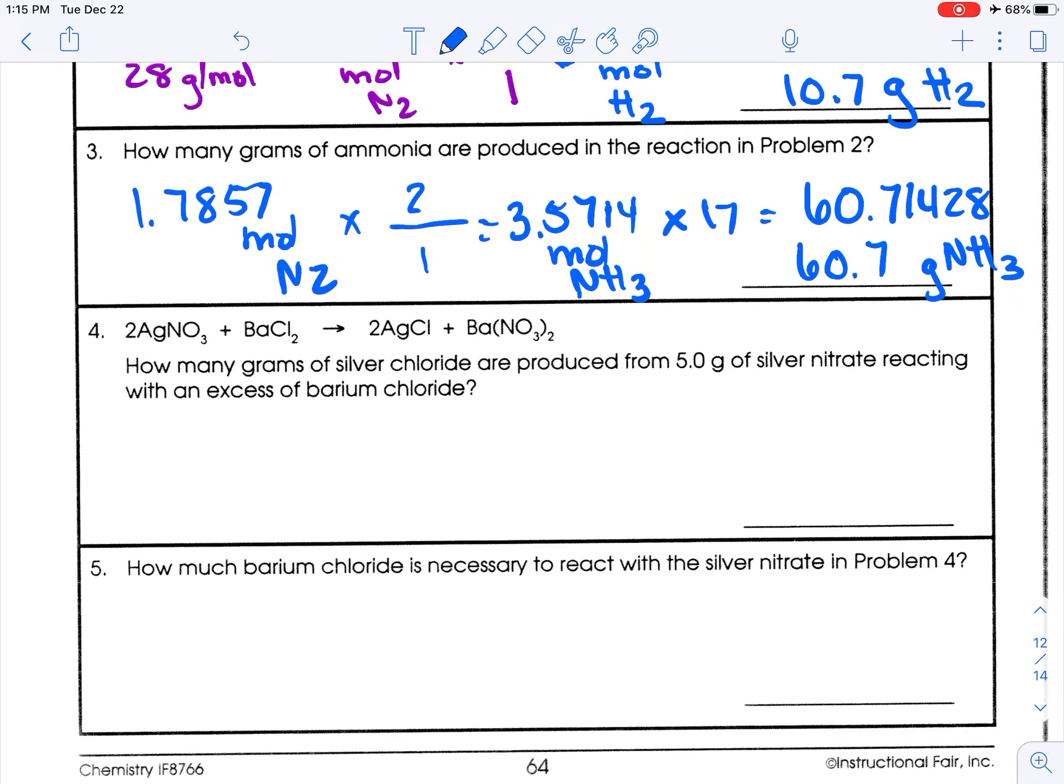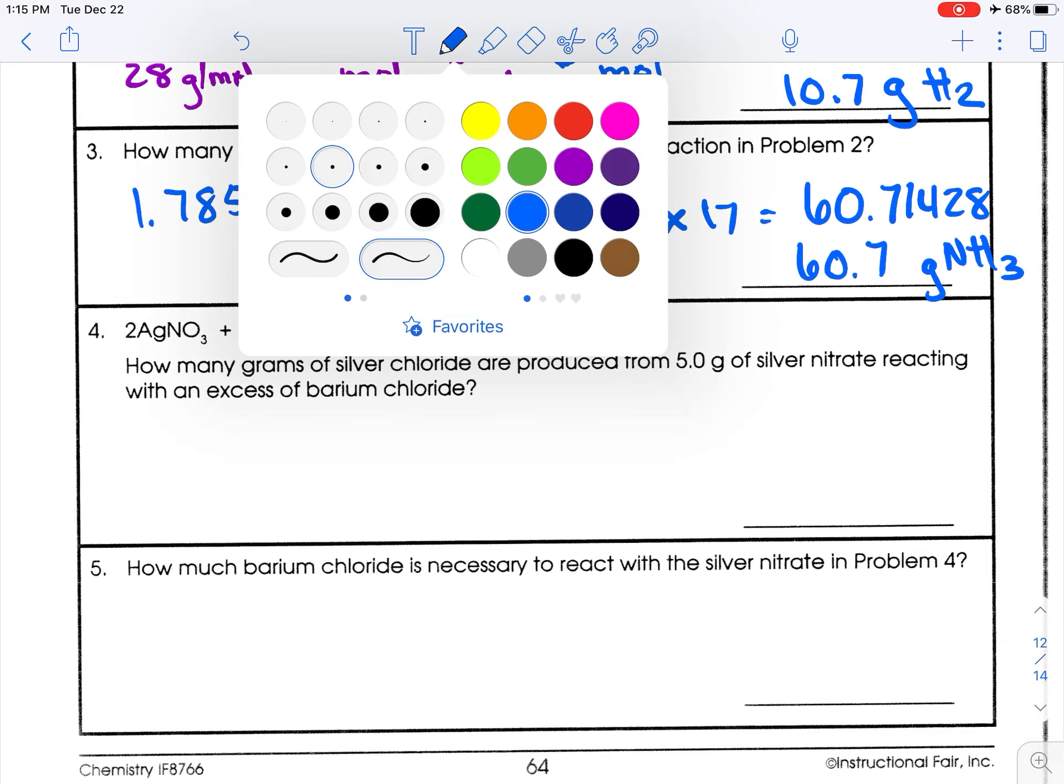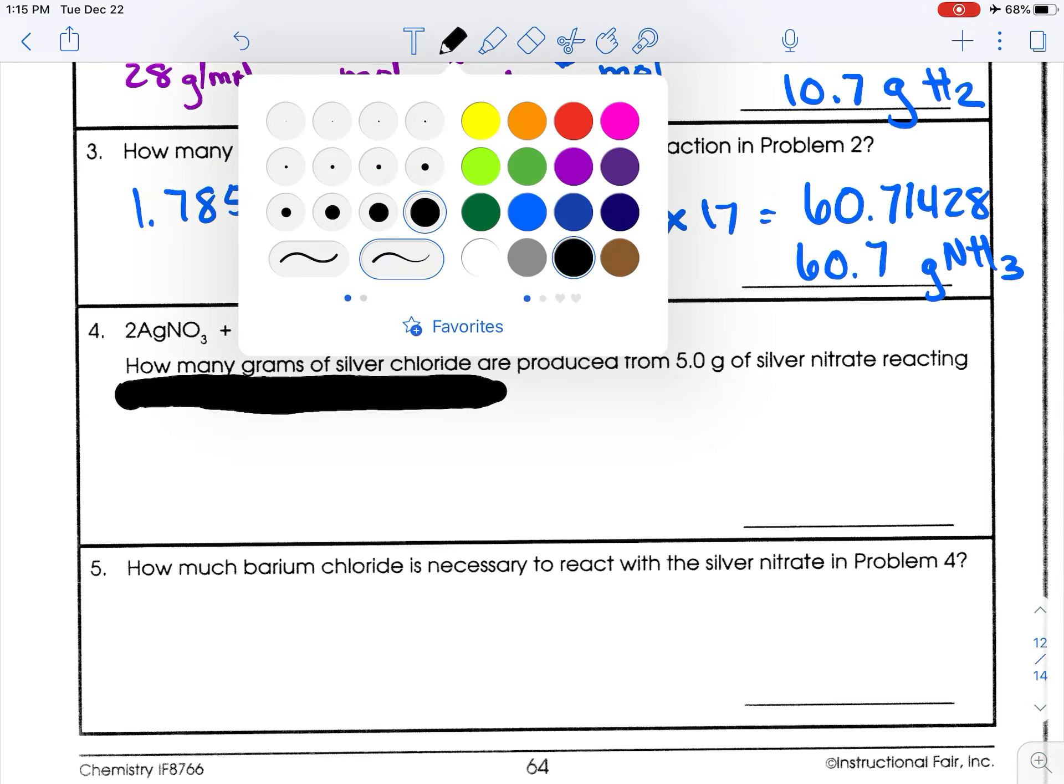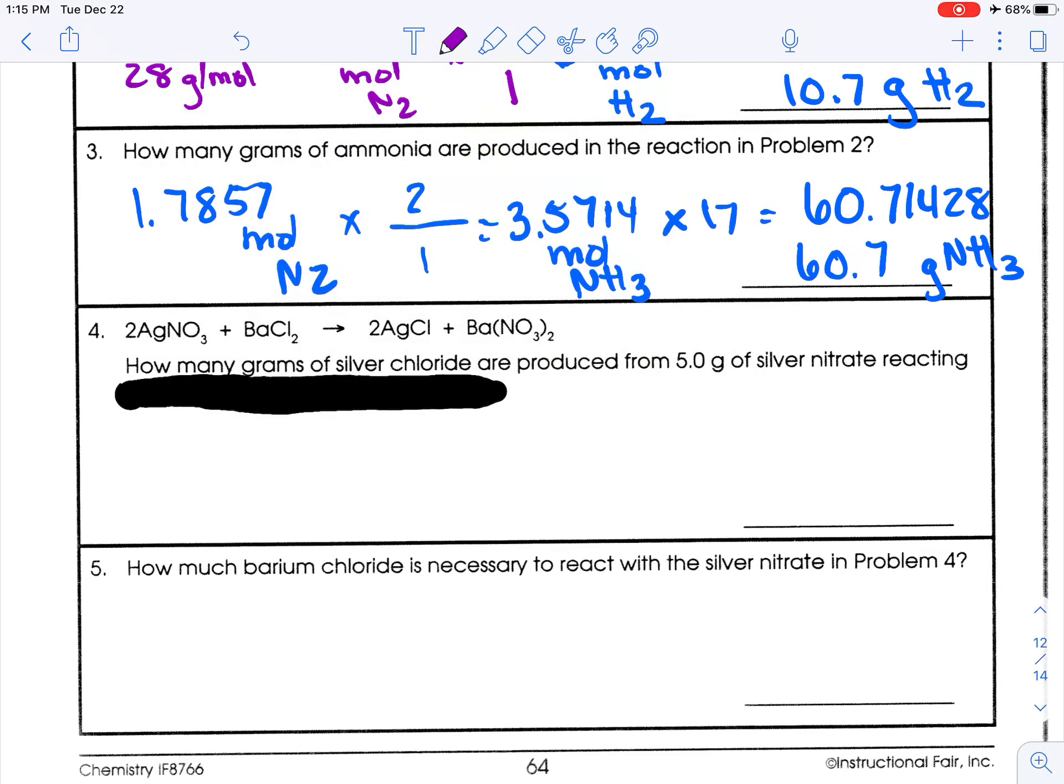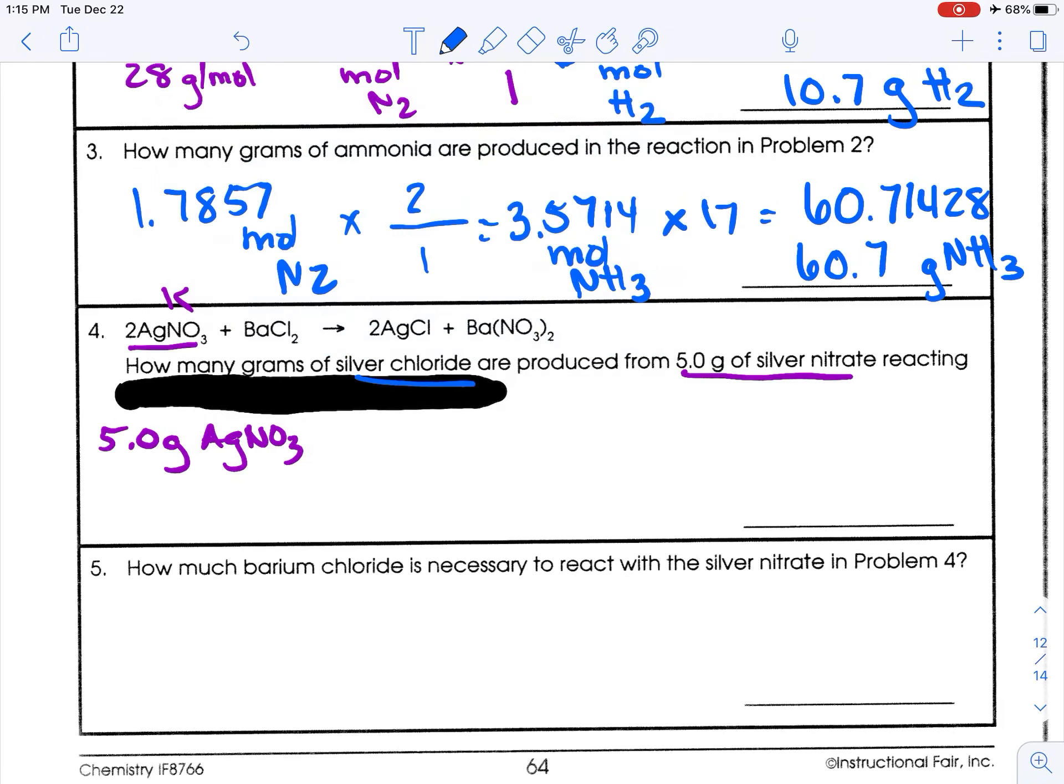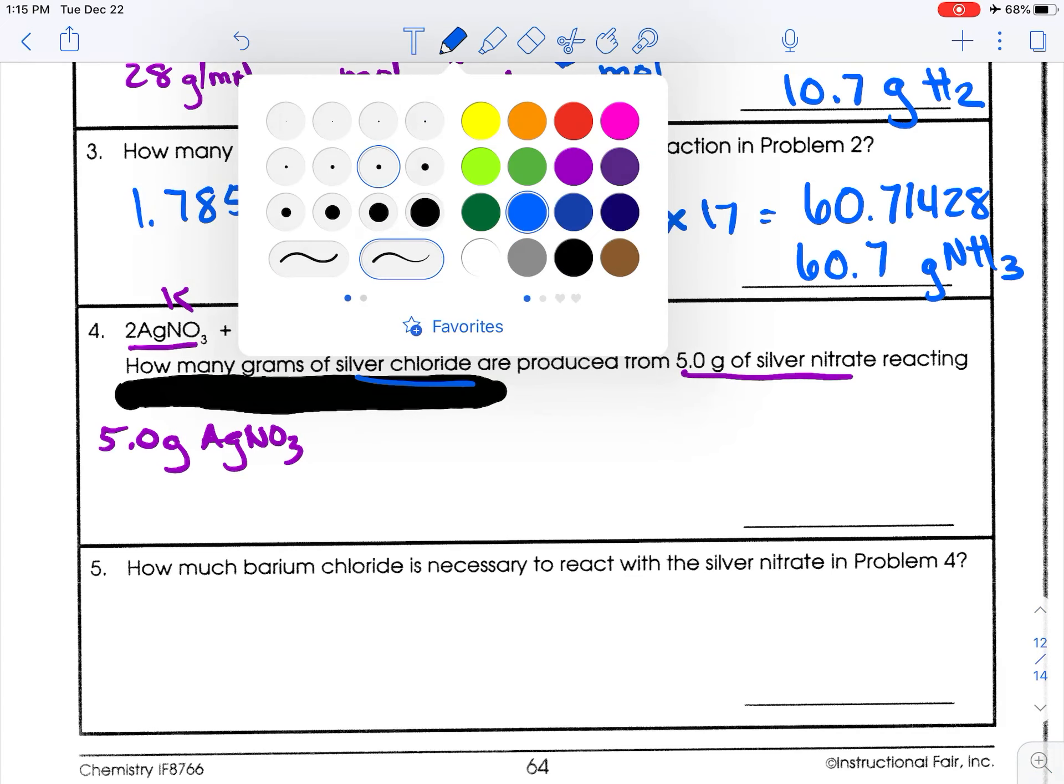How many grams of silver chloride are produced from 5 grams of silver nitrate reacting with an excess of barium chloride? Okay. So the whole excess part that we don't need to worry about for this math. We could talk about that later. We're talking about limiting reagents. But for right now we don't need to know about that. So our given is 5 grams silver nitrate. So silver nitrate is here. This is what we know. So 5 grams silver nitrate. And what do I seek? I seek silver chloride. So here it is. This is what I seek.